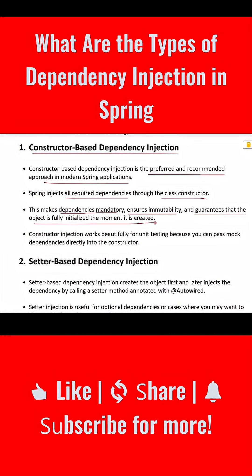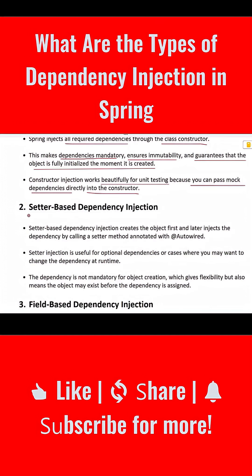Constructor injection makes dependencies mandatory, ensures immutability, and guarantees that the object is fully initialized the moment it is created. Constructor injection also works beautifully for unit testing because you can pass mock dependencies directly into the constructor.